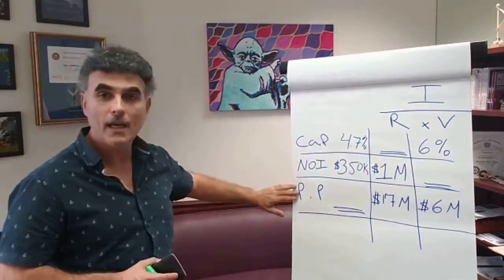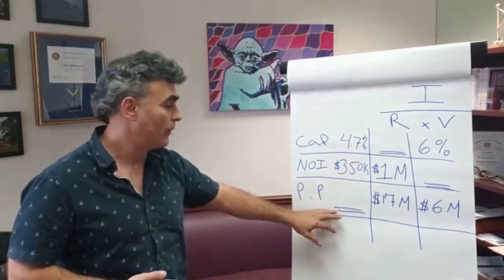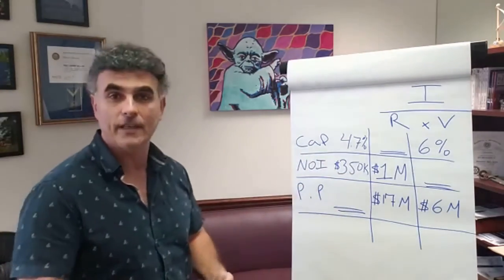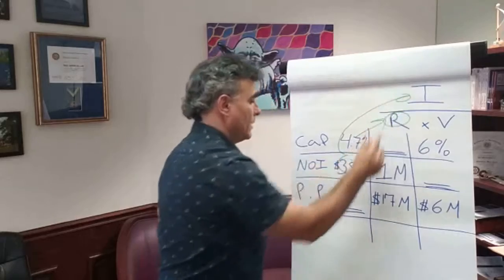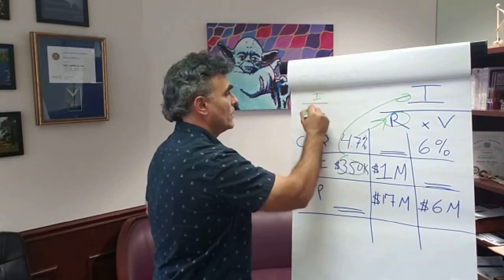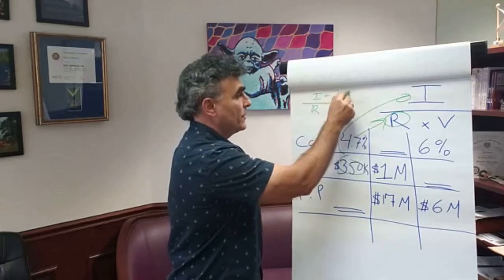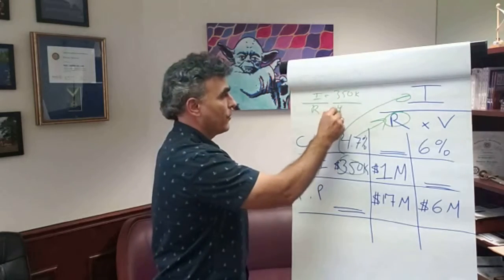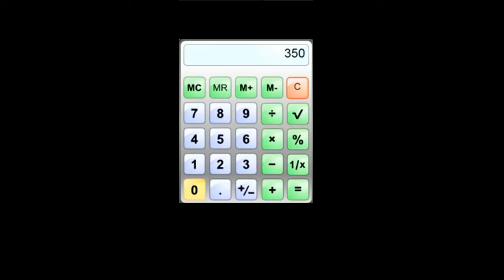So let's get into it. Here we have cap rate, NOI, and purchase price. Let's say we have a cap rate of 4.7% and our NOI is $350,000, and we're looking for the purchase price. The equation is I over R, and all we do is substitute. So I is $350,000 and the cap rate is 4.7%. We take out our calculators and go 350,000 divided by 4.7%, and that gives us a purchase price of around 7.5 million dollars. That's how we got that.